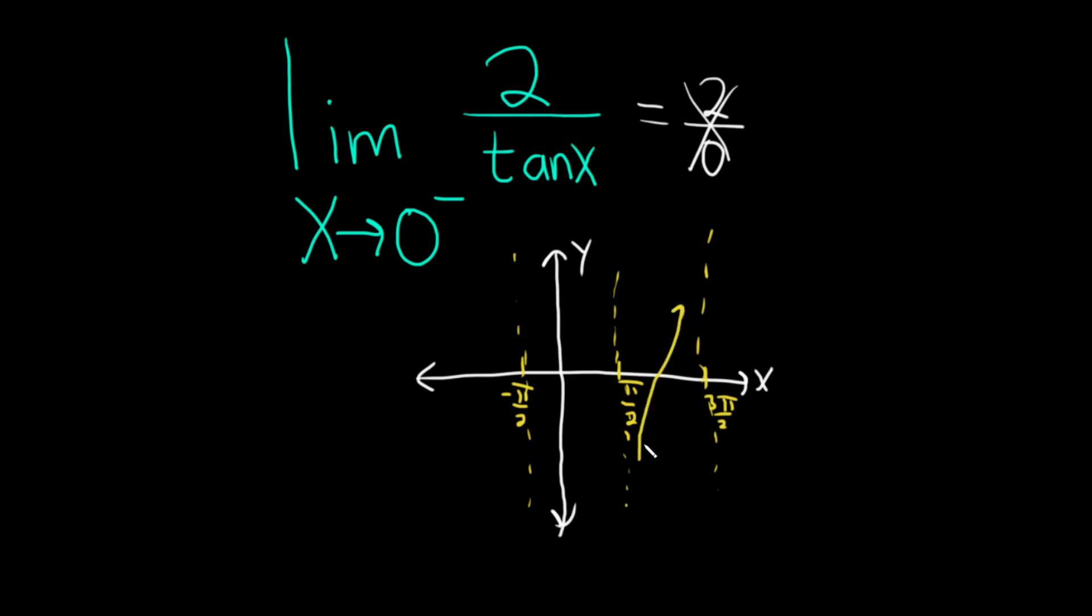So it looks something like that. And then it looks something like that. Again over here it's something like this. We're only concerned with what's happening near 0, so right here.